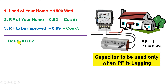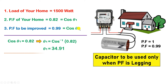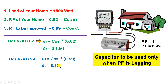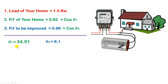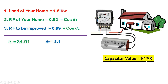To find theta 1: cos theta 1 = 0.82, so theta 1 = cos⁻¹(0.82) = 34.91 degrees. Similarly, cos theta 2 = 0.99, so theta 2 = 8.10 degrees. Now to find the required capacitor value in kVAR, we use the formula: kVAR = kW × (tan theta 1 − tan theta 2).